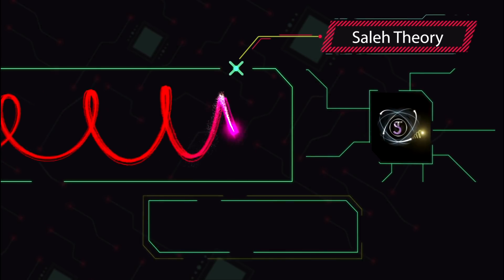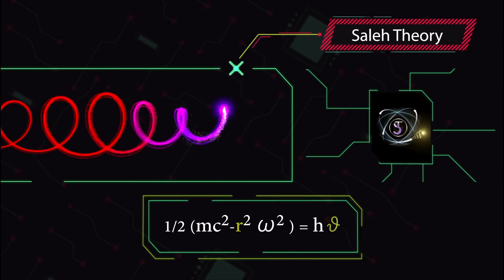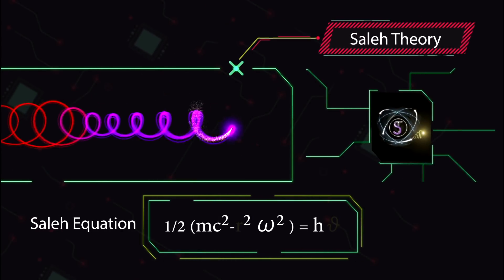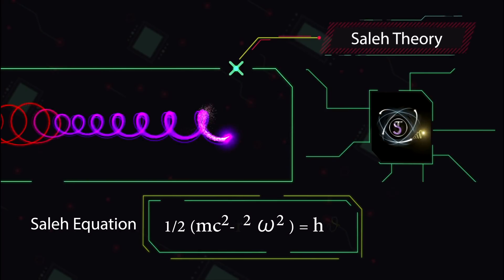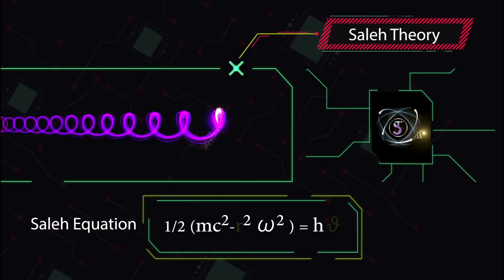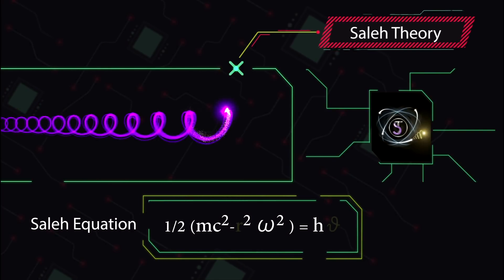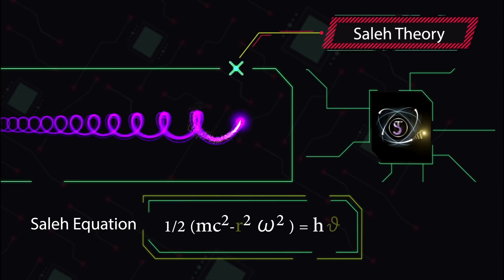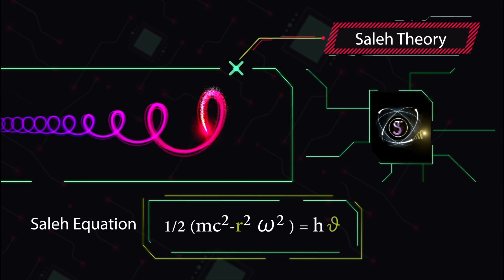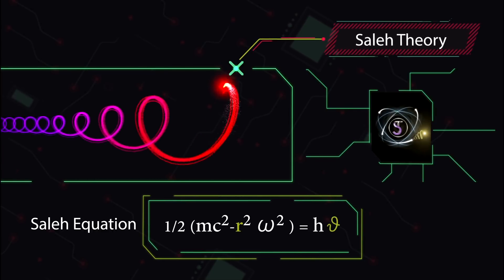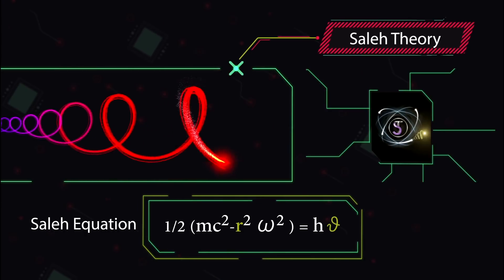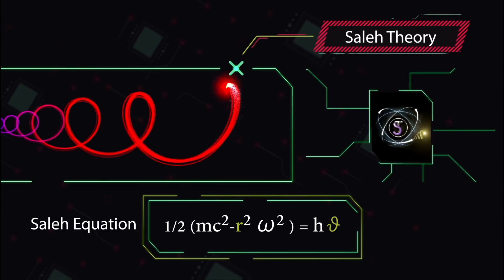However, as we have before explained, the realistic equation to calculate the energy of photon based on its three-dimensional motion is the Saleh equation. In our equation, the variables are the frequency and the gyro-radius of photon.